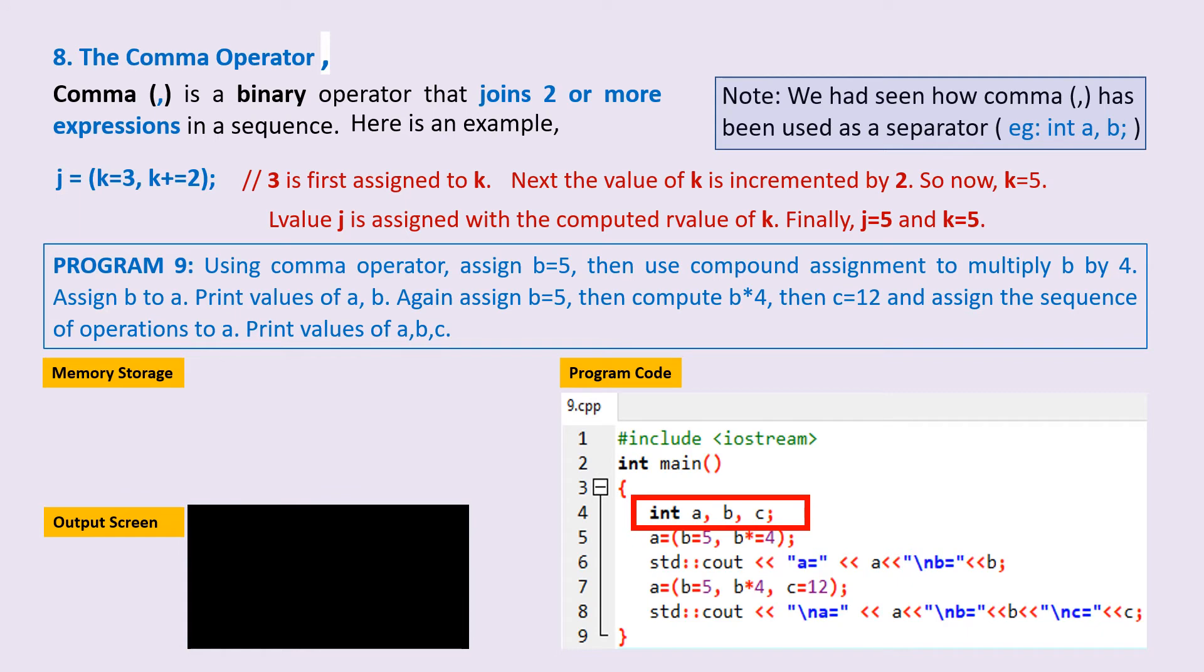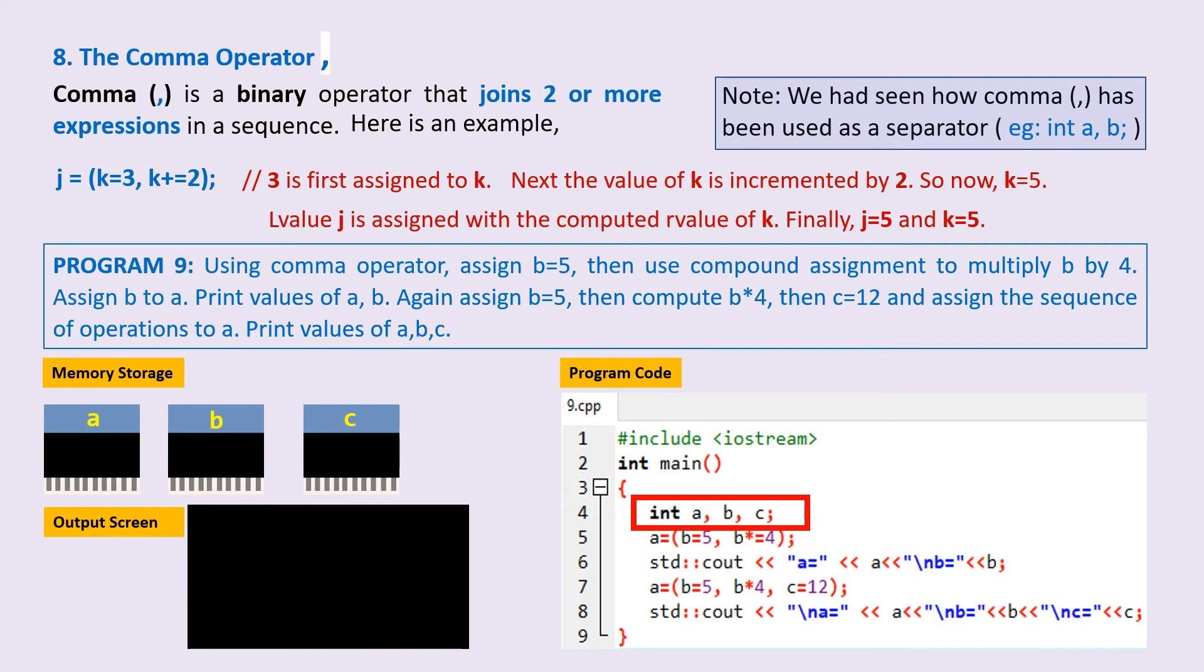On line 4, I have declared three integer variables a, b, and c. So here are the physical storage locations a, b, and c. On line 5, we have a = (b=5, b*=4). It first stores 5 to the memory storage location named b. Look at the memory storage panel.